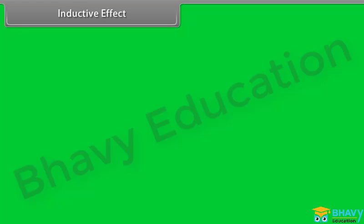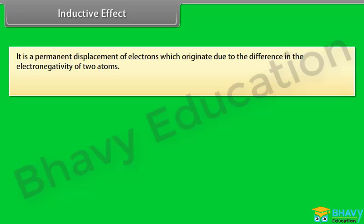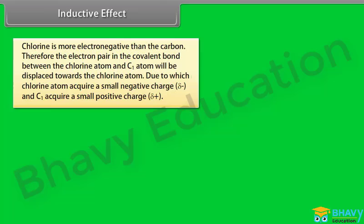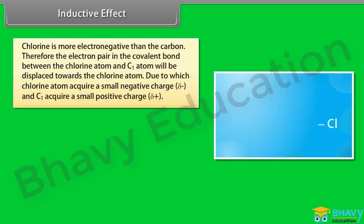The inductive effect is a permanent displacement of electrons which originates due to the difference in electronegativity of two atoms. Consider a chain of carbon atoms where the terminal carbon C1 is joined to a chlorine atom. Since chlorine is more electronegative than carbon, the electron pair in the covalent bond between chlorine and C1 is displaced towards chlorine, causing chlorine to acquire a small negative charge and C1 to acquire a small positive charge.